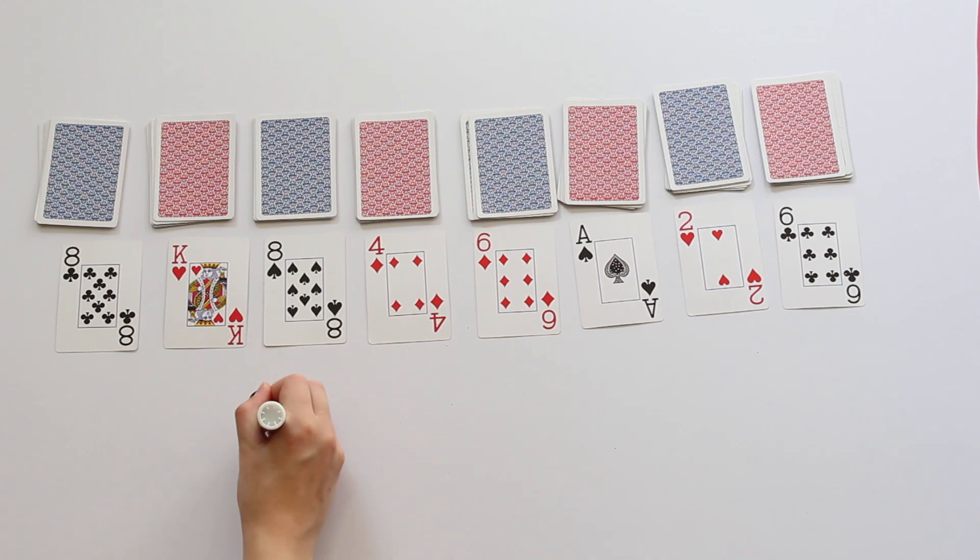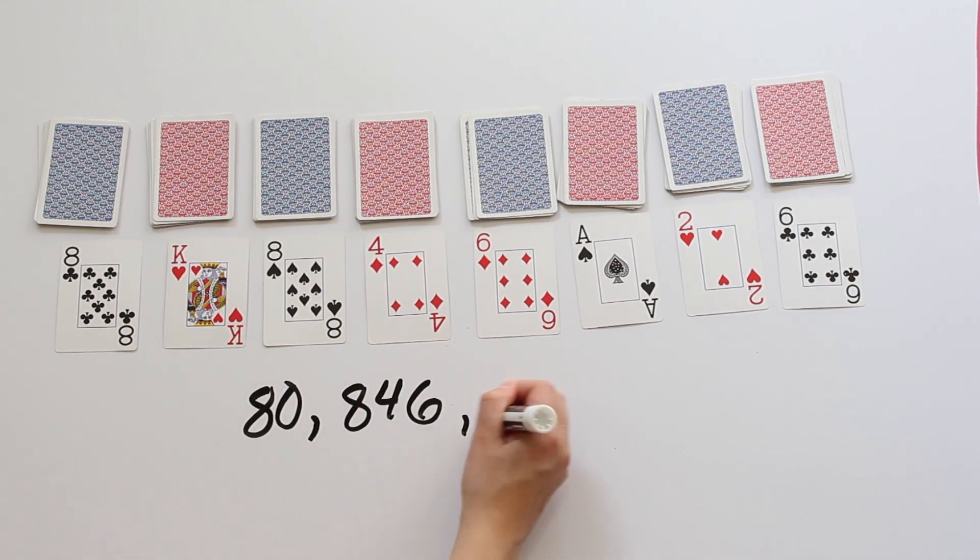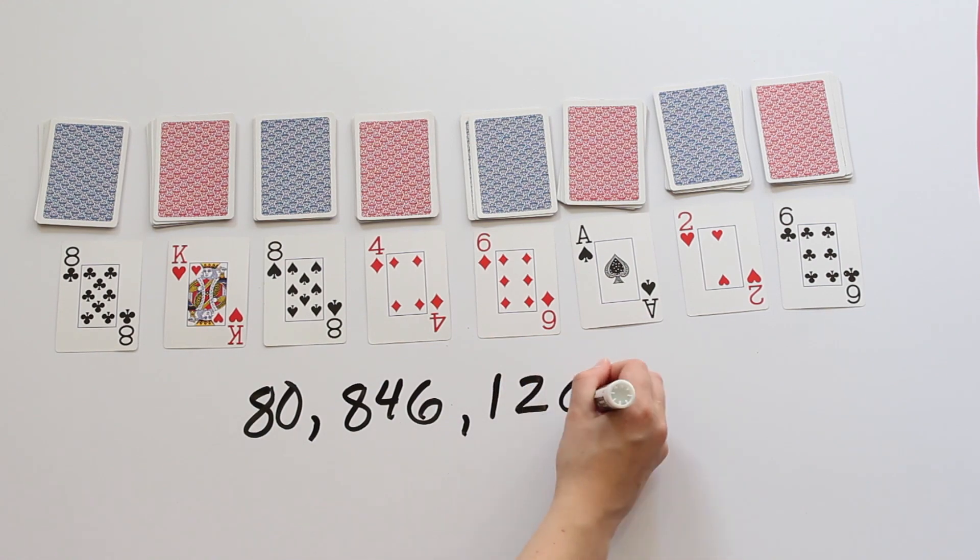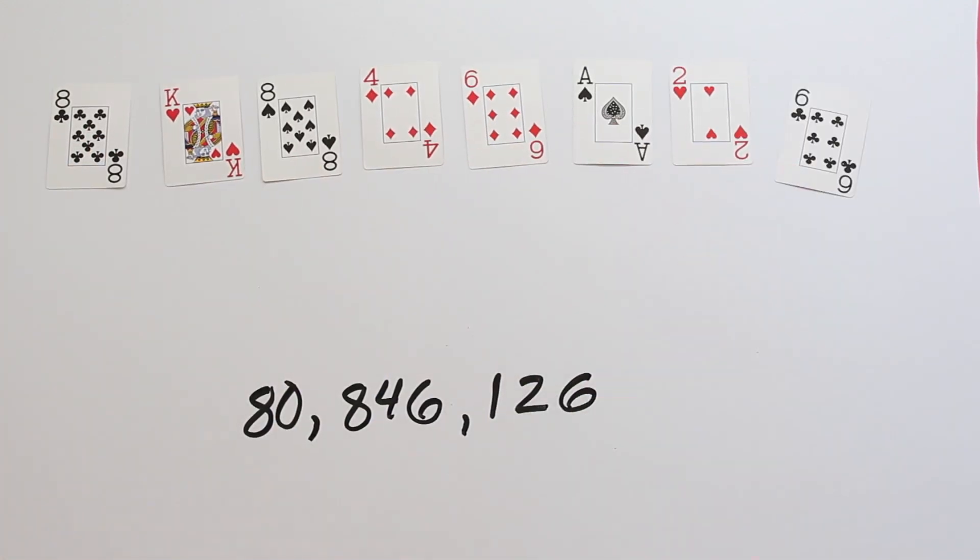Hmm, okay, it's not too bad. I like how almost all the digits are even. Let's see if we can say anything special about 80,846,126.